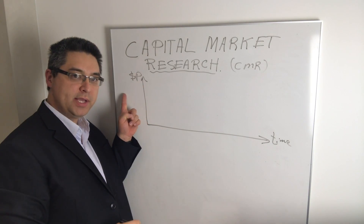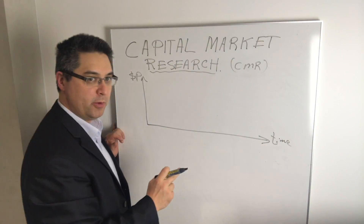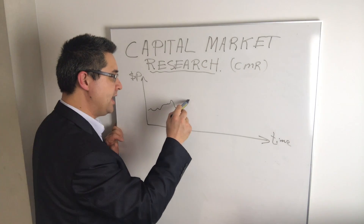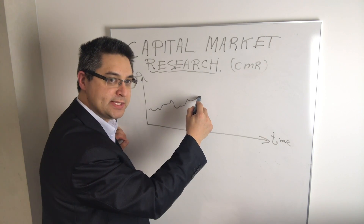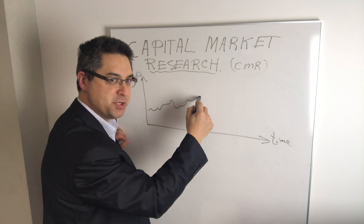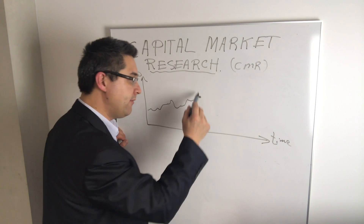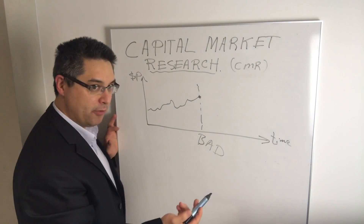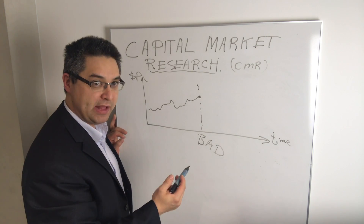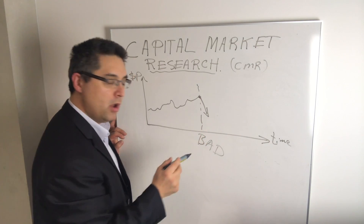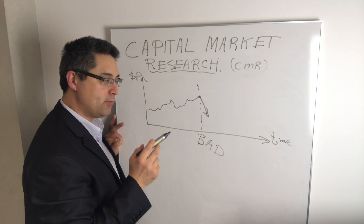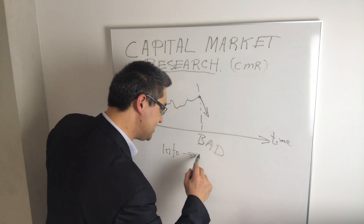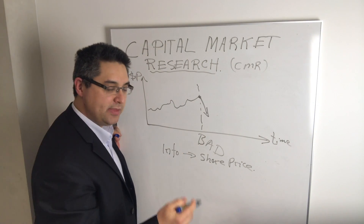We have the price of the stock across a time variable, and most of the time the stock price will go up and down. If something happens here — say there's a release of bad information — what will happen to the share price? Well, if there is some bad information, that would clearly be bad for profits and therefore push the value of the stock down.